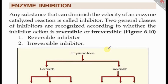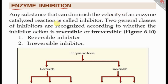Welcome back to my lectures. In this session we'll be studying about inhibition of enzyme activities, or enzyme inhibition. Enzyme inhibitors are those molecules which block or inhibit enzyme activity. Any substance that diminishes the velocity or the rate of an enzyme catalytic reaction is called an inhibitor. We have two general classes of enzyme inhibitors: reversible inhibitors and irreversible inhibitors.